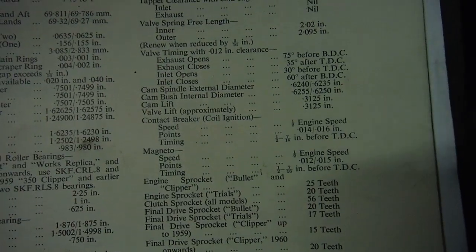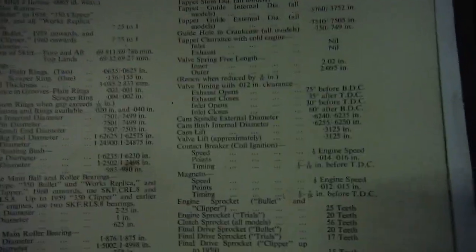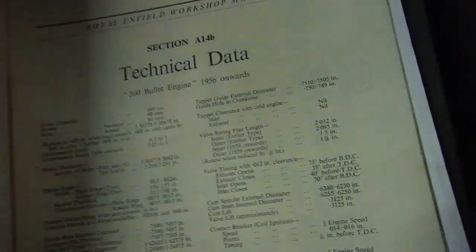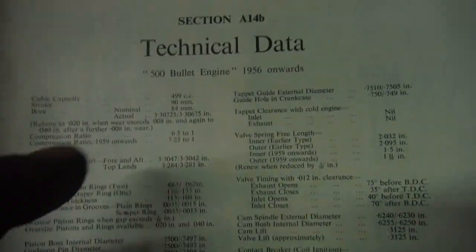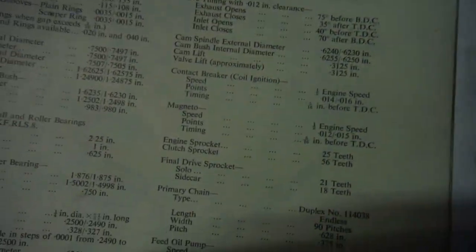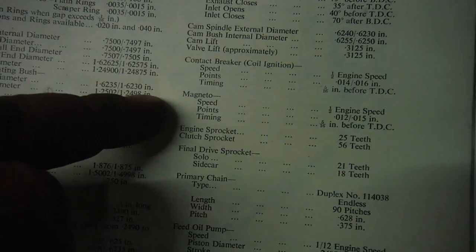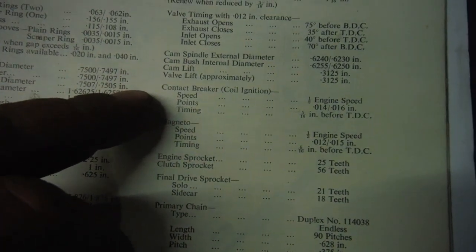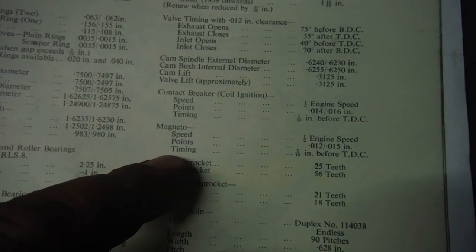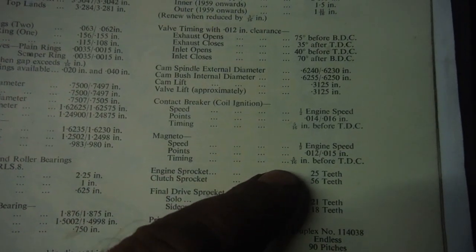Over the page we've got the figures for the 500, 1956 onwards. Again we've got magneto and contact breaker ignition figures for both, and these again will be at full advance of five-sixteenths of an inch before top dead center for the 500.